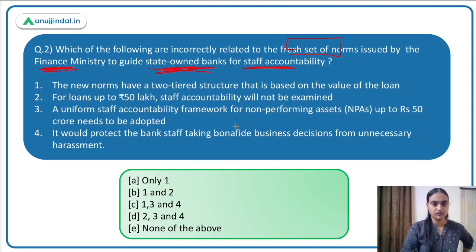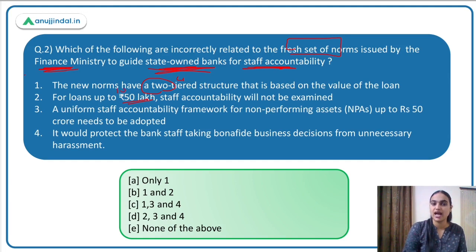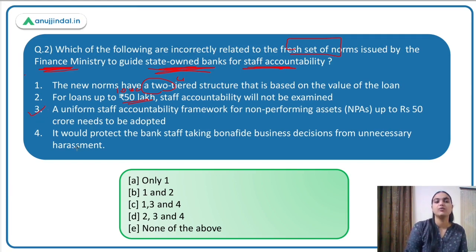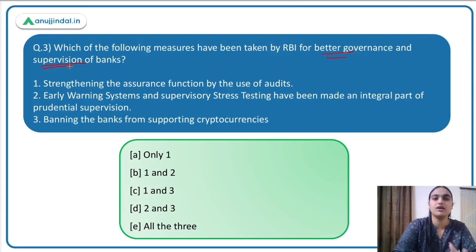Coming back to the question: the first statement says the new norms suggest a two-tier structure — incorrect, it is a four-tier structure. The second says for loans up to ₹50 lakh staff accountability will not be examined — incorrect, it is up to ₹10 lakh that accountability is not examined. The third says a uniform staff accountability framework for NPAs up to ₹50 crore needs to be adopted — yes, correct. The fourth says it would protect bank staff taking bona fide business decisions from unnecessary harassment — yes, correct. So the first two are incorrect; the answer is option B.